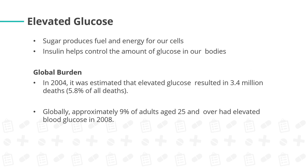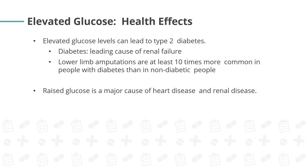The next metabolic risk factor is elevated glucose. Glucose produces fuel and energy for our cells. The hormone insulin helps control the amount of glucose by converting it to glycogen stored in the liver. In 2004, elevated glucose resulted in 3.4 million deaths — 5.8% of all deaths. Approximately 9% of adults age 25 and over had elevated blood glucose in 2008. Elevated glucose levels can lead to type 2 diabetes, which is a leading cause of renal failure. Lower limb amputations are at least 10 times more common in people with diabetes. Raised glucose is also a major cause of heart disease and renal disease.